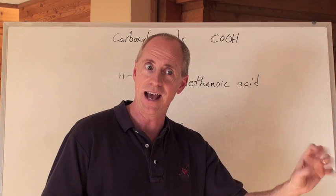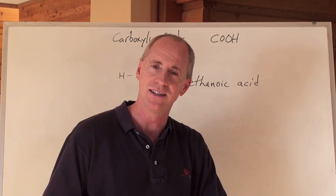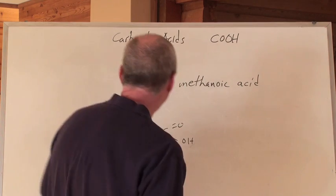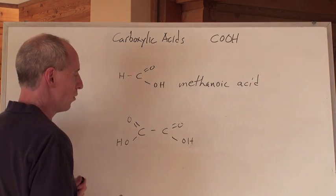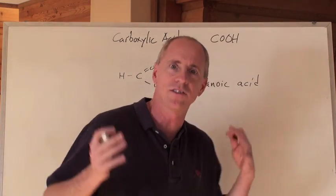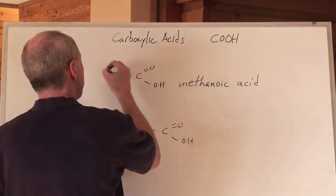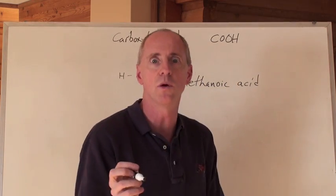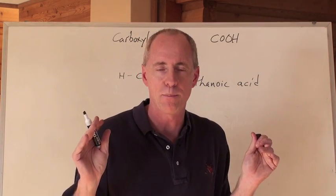An antacid is actually a base, which neutralizes your stomach acid. Anyway, the naming series goes: methanoic, ethanoic, propanoic, butanoic — and butanoic acid is the worst smell on the planet.